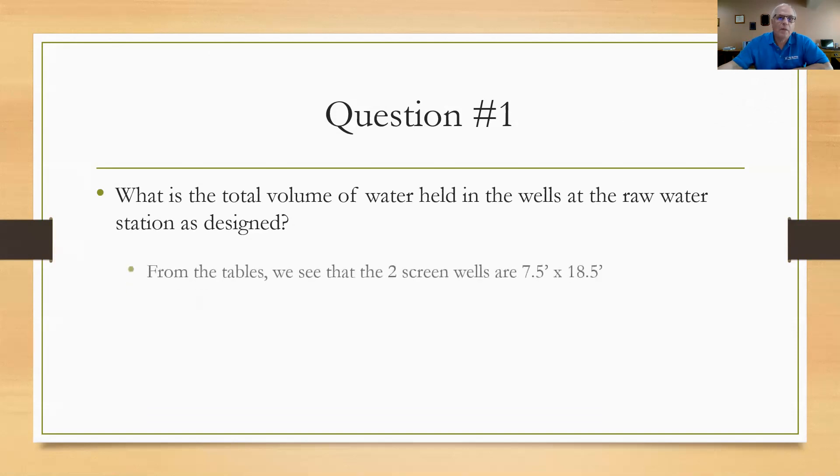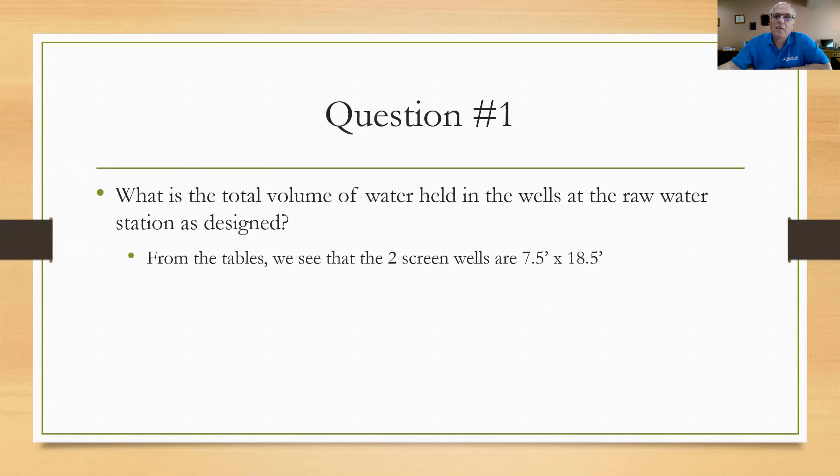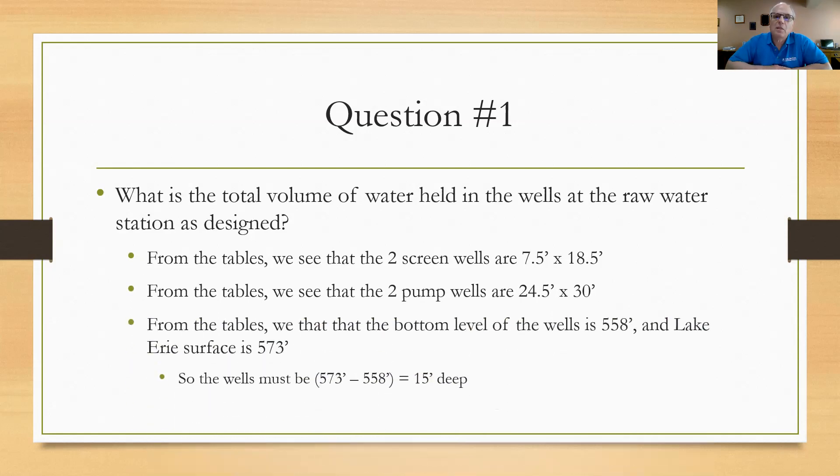Okay, here's how I went about this problem. I look into the tables and I see that there are two screen wells and each of them are seven and a half feet by 18 and a half feet. And the two pump wells are 24 and a half feet by 30 feet. That's the only dimensions they gave for those. But from the table we also see that the bottom level of the wells is 558 feet whereas Lake Erie surface was 573 feet. So the bottom of the wells subtracted from the surface will tell you that the wells must be 15 feet deep evenly across.